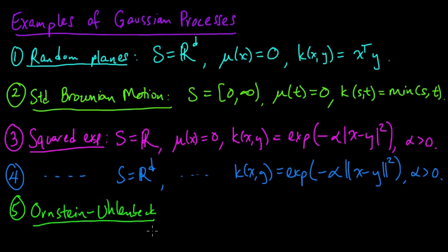The next one on our list is this Ornstein-Uhlenbeck thing. These are two people's names, two physicists if I'm not mistaken. They defined a process with the following: again the mean function is zero everywhere.